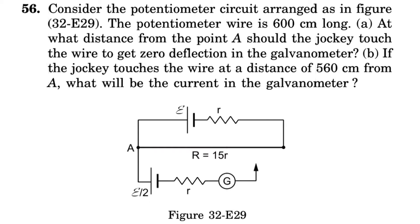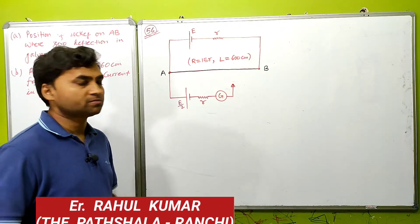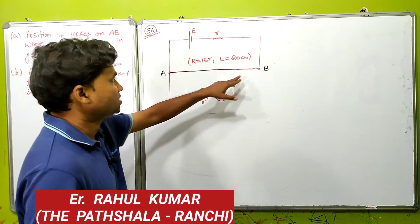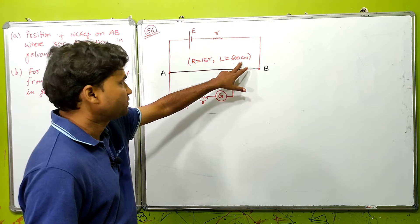Question number 56. Consider the potentiometer circuit arranged as in the figure. The potentiometer wire is 600 cm long. Part A: at what distance from point A should the jockey touch the wire to get zero deflection in the galvanometer? The potentiometer wire has a total length of 600 cm.